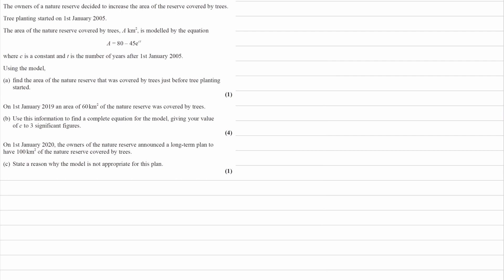The owners of a nature reserve decided to increase the area of the reserve covered by trees. Tree planting started on the 1st of January 2005. The area of the nature reserve covered by trees is given by this equation, where C is a constant and T is the number of years after that time. The question is asking us to find the area covered by trees just before tree planting started.